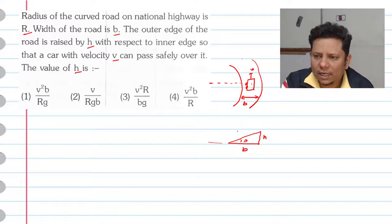V is the velocity and this is the car. This is the radius of curvature. This is the center and this is radius R.